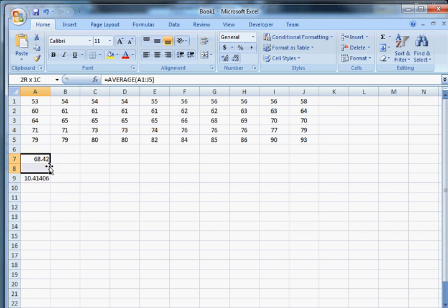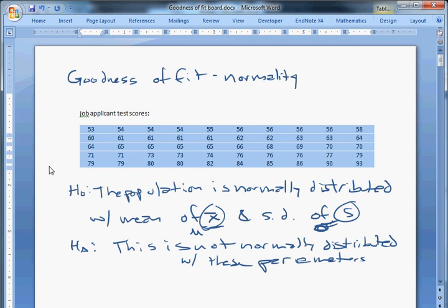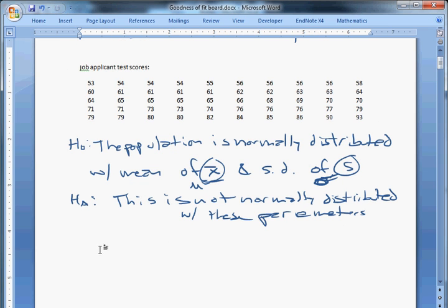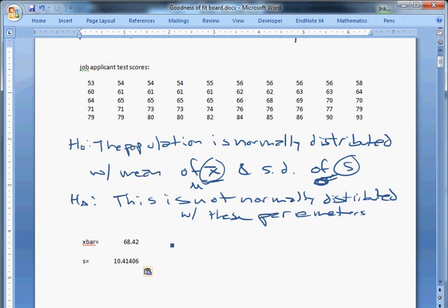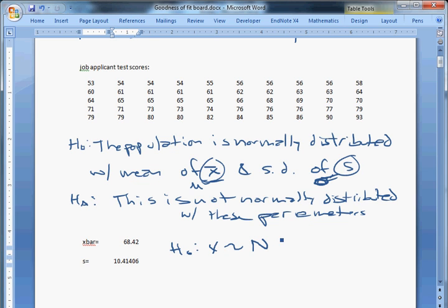So now our new null hypothesis is that x is distributed normally with a mean of 68.42 and a variance of 10.41 squared. And our alternative is that x is not normally distributed with those parameters.